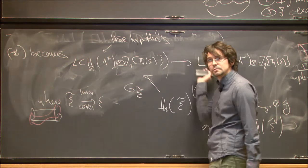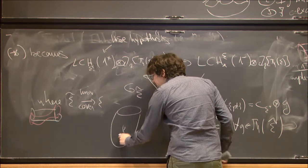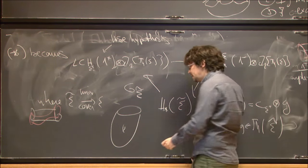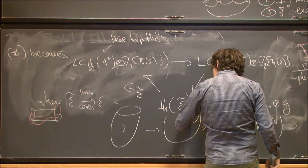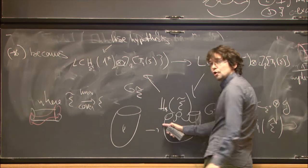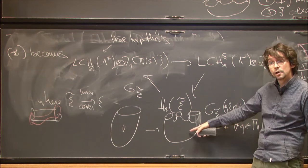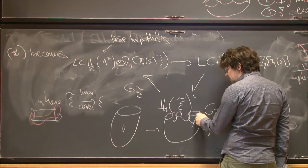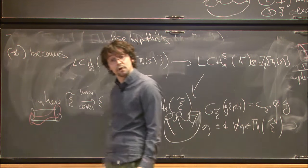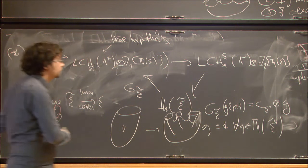Geometrically: I have something simply connected, I have something I want to think of as a filling (though it's not), I take the universal cover of this virtual filling. Since the boundary is simply connected, I get as many copies of λ as there are elements in π₁. But I know the point maps to the fundamental class of each one, so there can only be one copy. That's the proof of Theorem A.